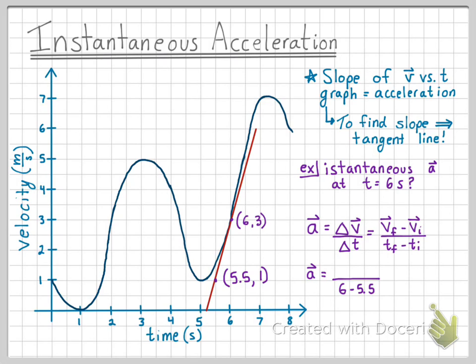Now, let's fill in the corresponding velocities. We know that the velocity at six seconds is three meters per second and the velocity at 5.5 seconds is one meter per second. We can then simplify this expression and we find that the instantaneous acceleration at the time six seconds is four meters per second squared.